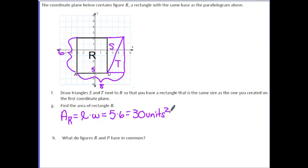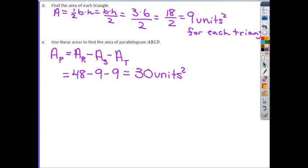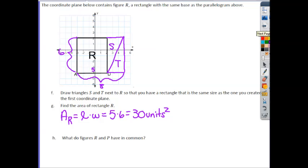Part H says, what do figures R and P have in common? So if we look back to the conclusions we found on the first example, we found that parallelogram P had an area of 30 units squared. And our rectangle that has the same height and base as our parallelogram has the same area as well. So really, what we should notice here is they have the same base, height, and area.